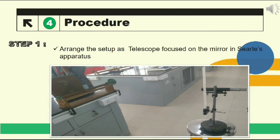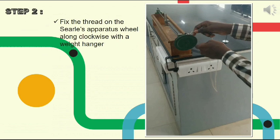Place the telescope focusing on the mirror of Sewell's apparatus. Fix the thread on the wheel of Sewell's apparatus with the weight anchor.